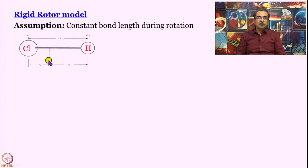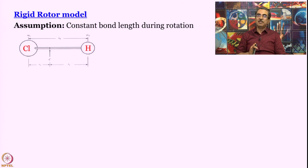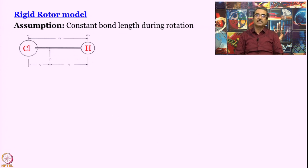Now, the fine print here: C is the center of mass. Chlorine is a much bulkier atom than hydrogen, so the center of mass will be displaced towards Cl. R₀ is the bond length, and R₁, R₂ are the individual distances. This is a little problematic model to use to start with because there are two bodies — if you try to write the equation, you will have too many terms. So the common approach, coming from classical mechanics, is to reduce this two-body problem to a one-body problem.